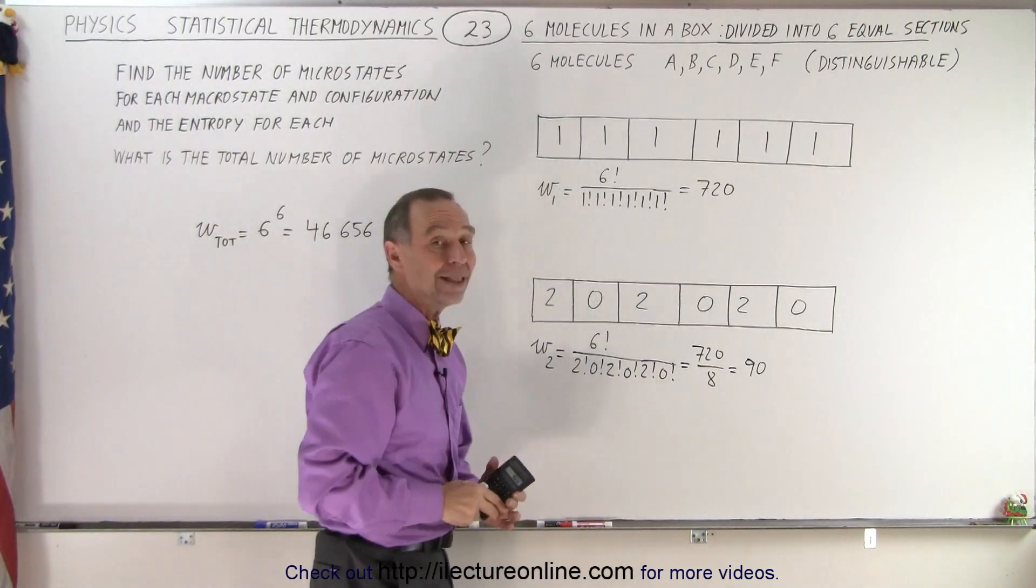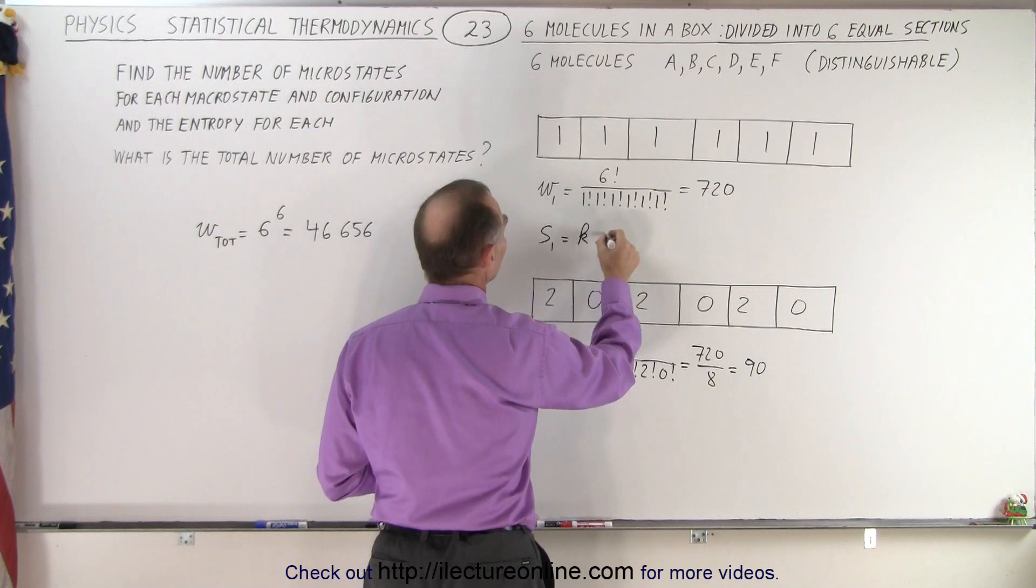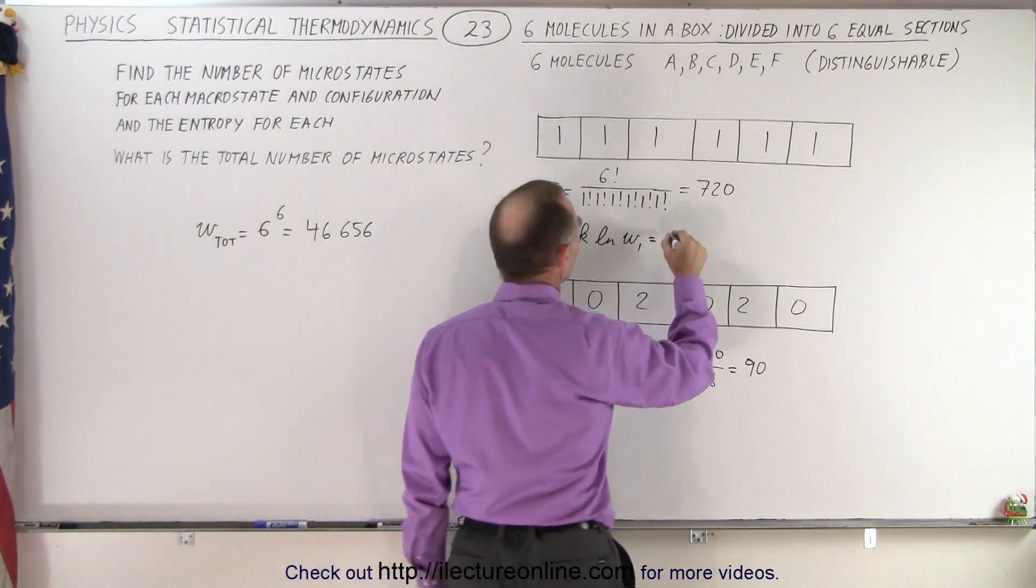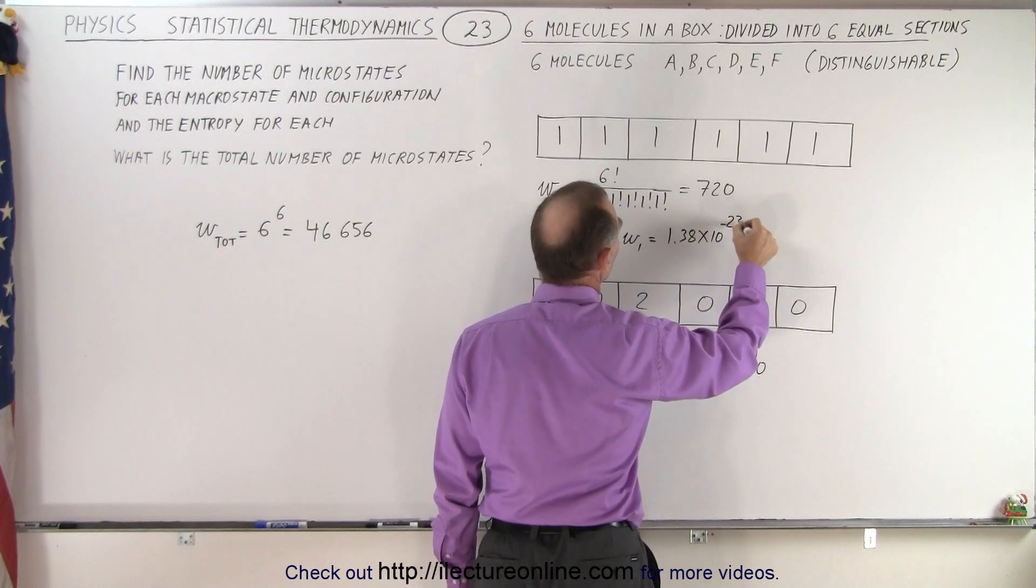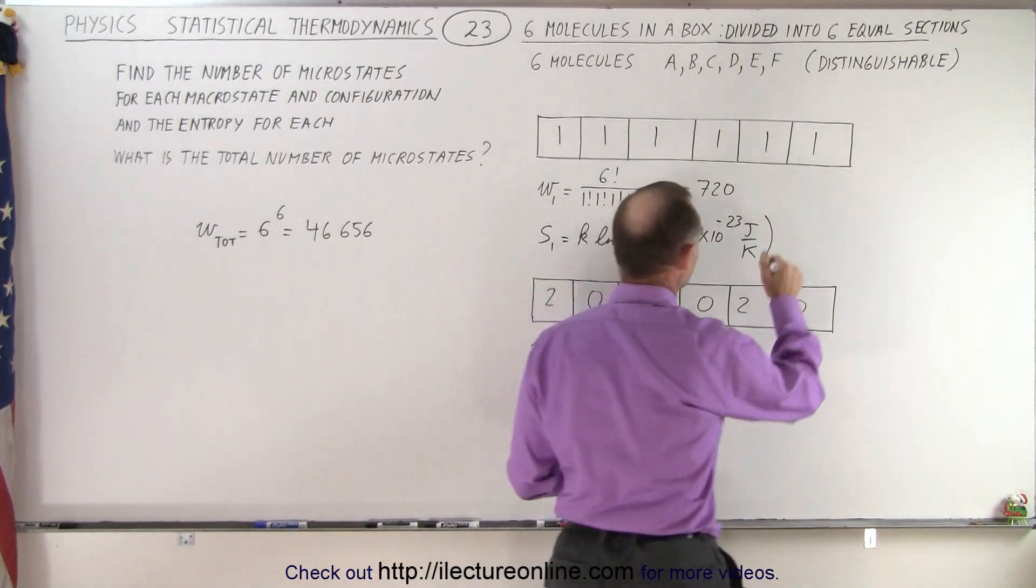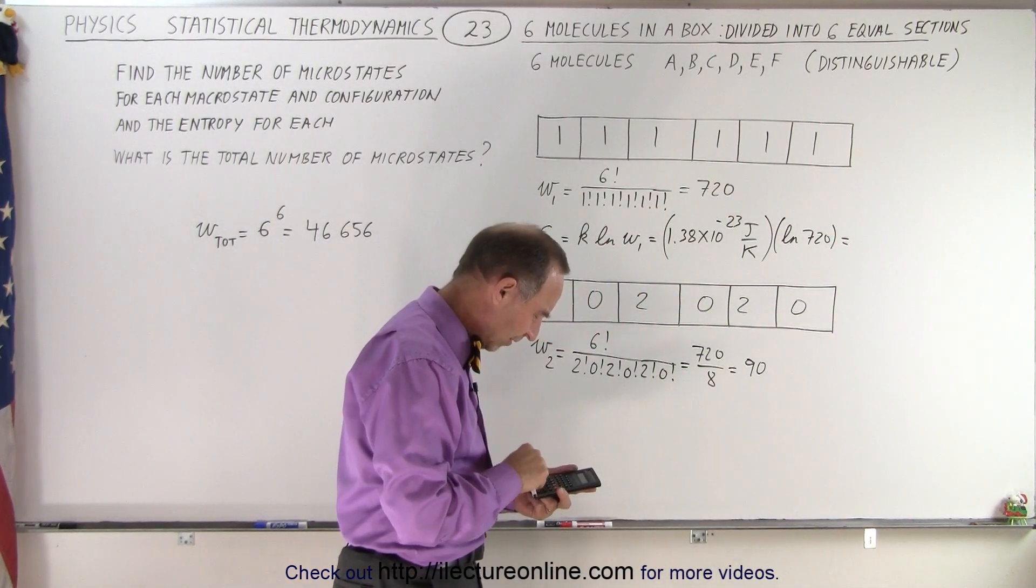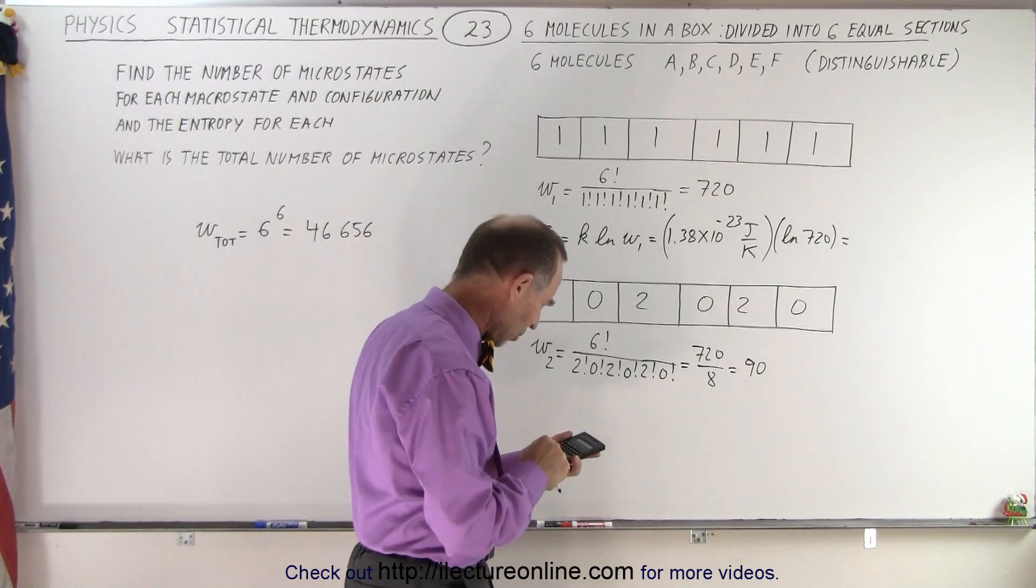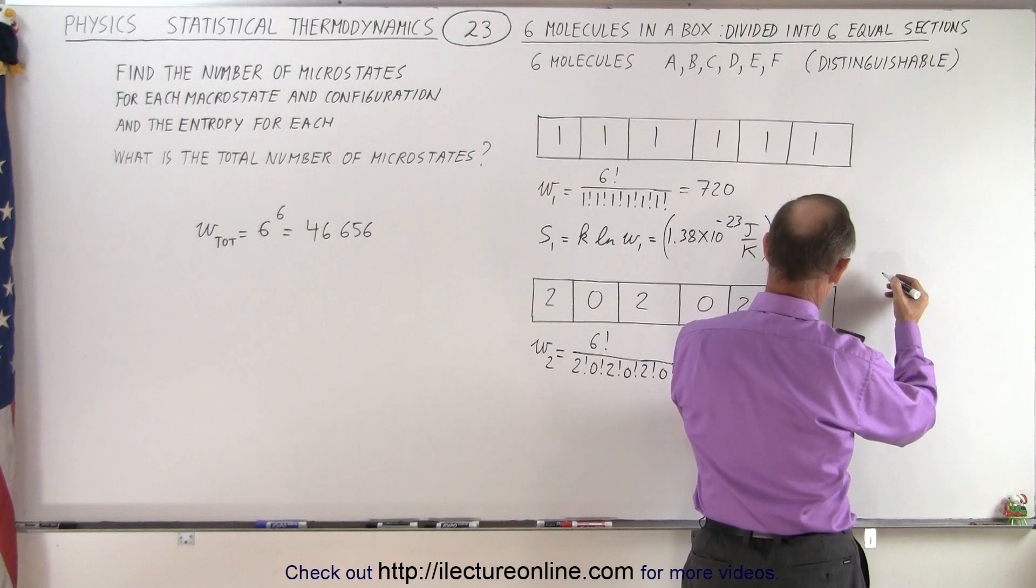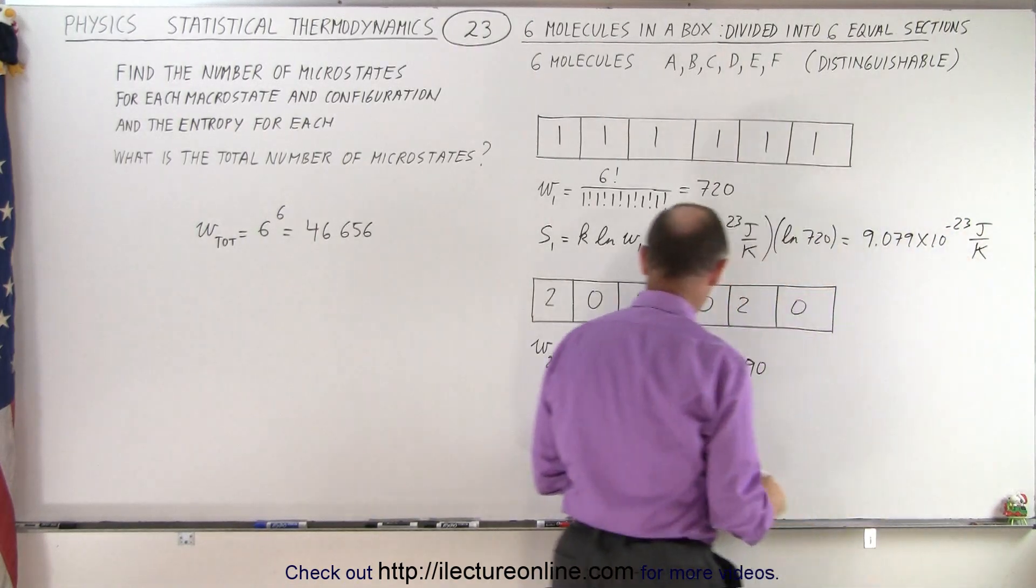Alright, in this particular case, what would be the entropy? The way to calculate the entropy, S sub 1, that's equal to K, which is the Boltzmann constant, times the natural log of W sub 1. So this would be equal to 1.38 times 10 to the minus 23 joules per Kelvin. And multiply that times the natural log of 720. So take 720, take the natural log, which is about 6.6, and multiply that times 1.38 e to the minus 23, and we get, that's equal to 9.079 times 10 to the minus 23 joules per Kelvin.